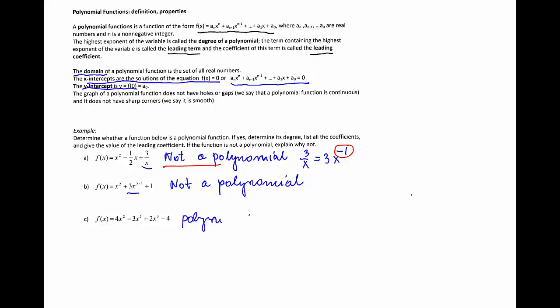So if it is a polynomial, we would like to figure out the degree, coefficients, leading term, and leading coefficient. We start by rewriting this polynomial in standard form, starting with the term with the highest exponent, which in this case is 5. So we have -3x^5, next 2x^3, then 4x^2, and minus 4.